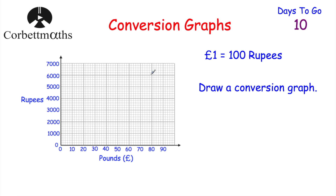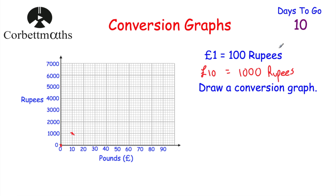Sometimes you'll be asked to draw a conversion graph. Here, at the time of writing, one pound was 100 Indian rupees. We need to plot points: zero pounds is zero rupees; 10 pounds is 1,000 rupees; 20 pounds is 2,000 rupees; and 50 pounds is 5,000 rupees. We plot these four points and they form a nice straight line, then we use a ruler and pencil to draw a straight line through them — and that's our conversion graph drawn.